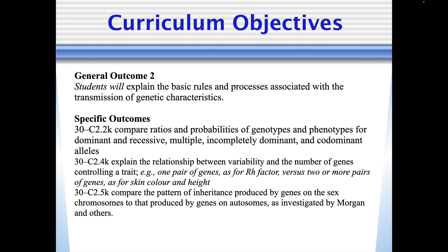Specific outcomes: students will be able to compare ratios and probability of genotypes and phenotypes for dominant recessive, multiple alleles, and completely dominant co-dominant alleles. Explain the relationship between variability and the number of genes controlling a trait. Also compare the pattern of inheritance produced by genes on sex chromosomes to that produced by genes on autosomes, as investigated by Morgan and others.